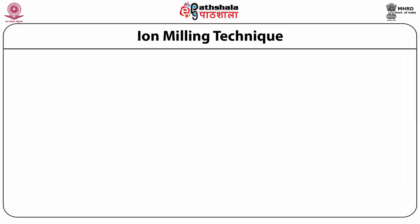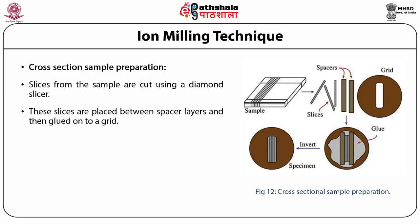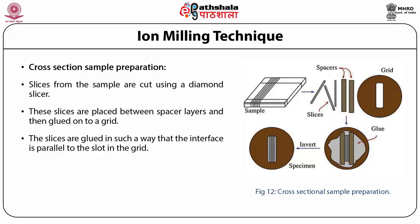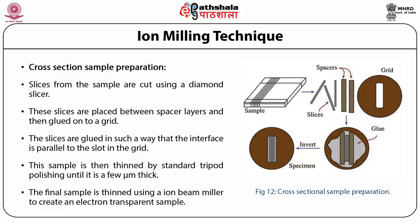The third technique is cross section sample preparation. Slices are cut from the sample using a diamond slicer, placed between spacer layers, and glued onto a grid so that the interface is parallel to the slot in the grid. The sample is then thinned by standard tripod polishing until it is a few microns thick, and the final sample is thinned using an ion beam miller to create an electron-transparent sample.